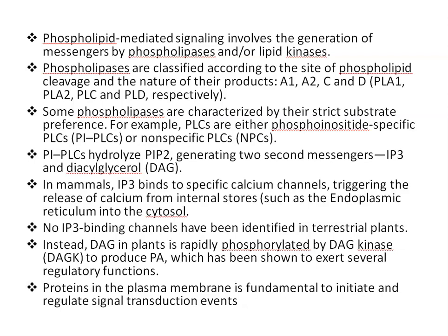In mammals, IP3 binds to specific calcium channels, triggering the release of calcium from internal stores like the endoplasmic reticulum in the cytosol. No IP3-binding channels have been identified in vascular plants. Instead, DAG (diacylglycerol) in plants is rapidly phosphorylated by DAG kinase enzyme to produce PA — phosphatidic acid — which has been shown to exert several regulatory functions.